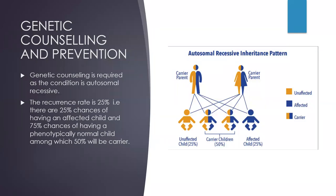Genetic counseling is important for prevention as it is an autosomal recessive condition. The counseling should include that there is a recurrence rate of 25% — that is, 25% chances of having an affected child and 75% chances of having a phenotypically normal child, among which 50% will be carriers. Therefore, consanguineous marriage in future among their children should be prohibited.